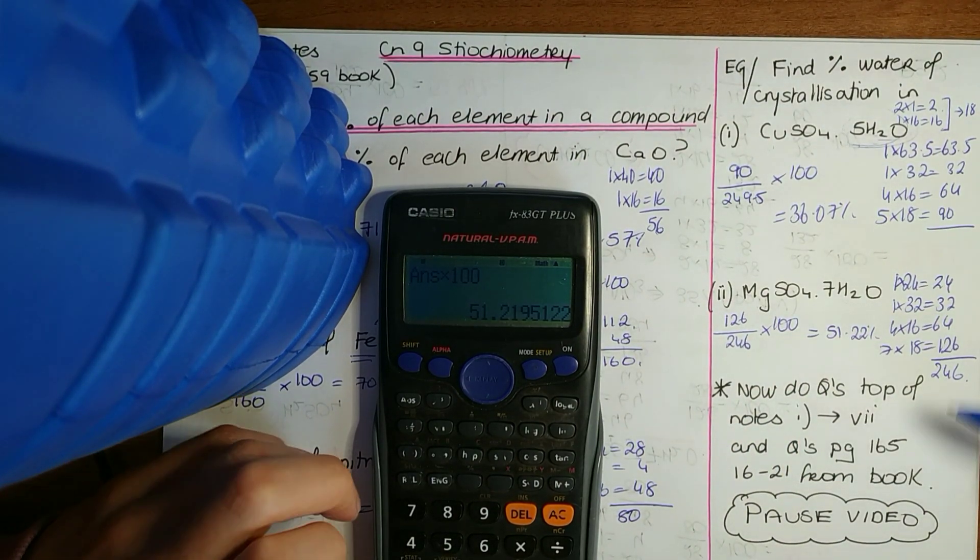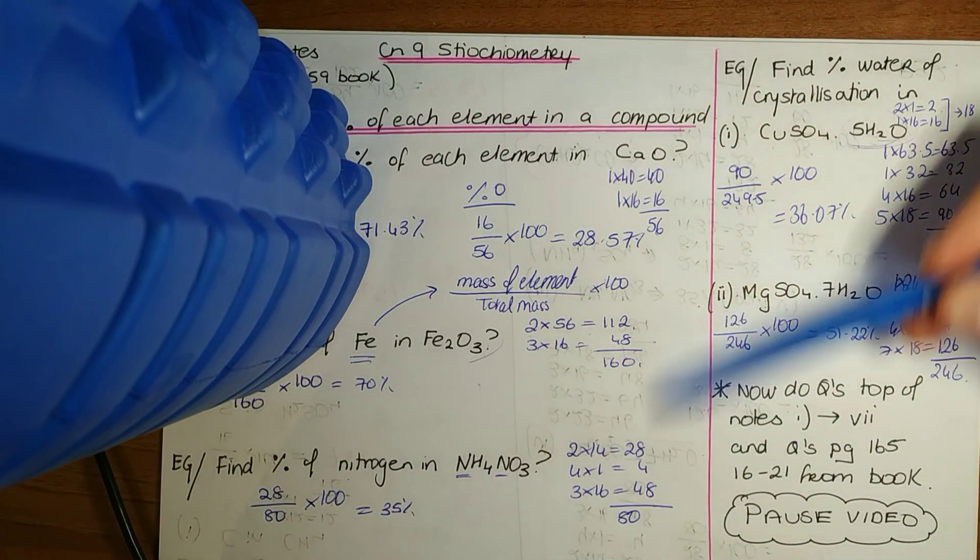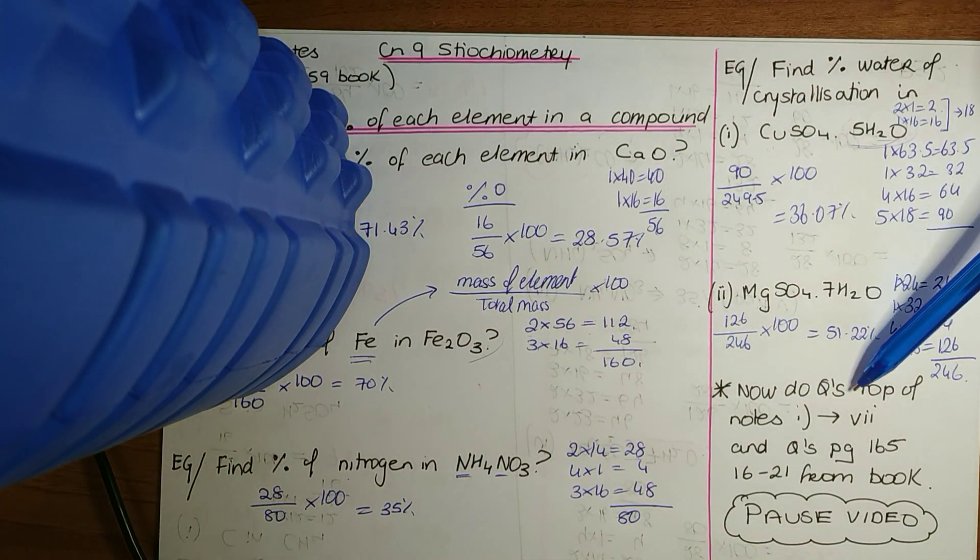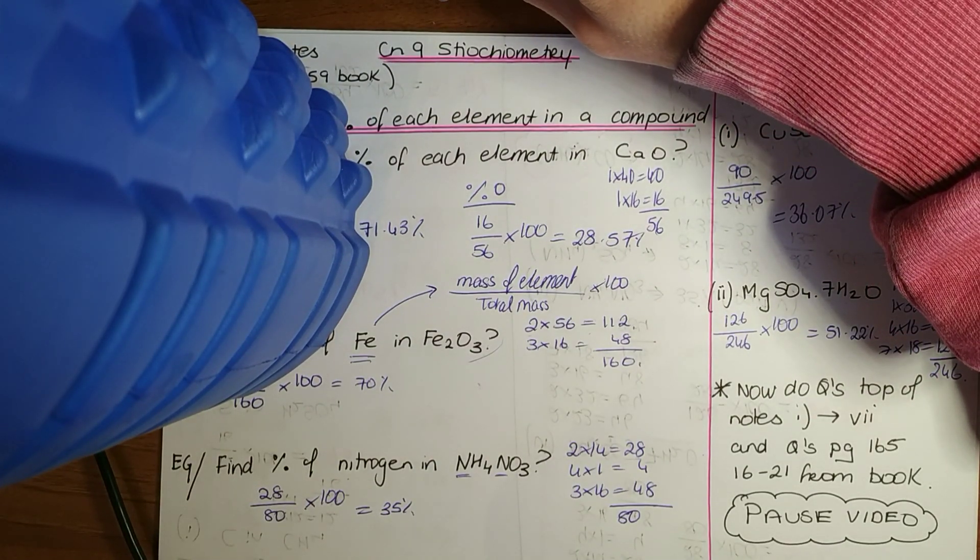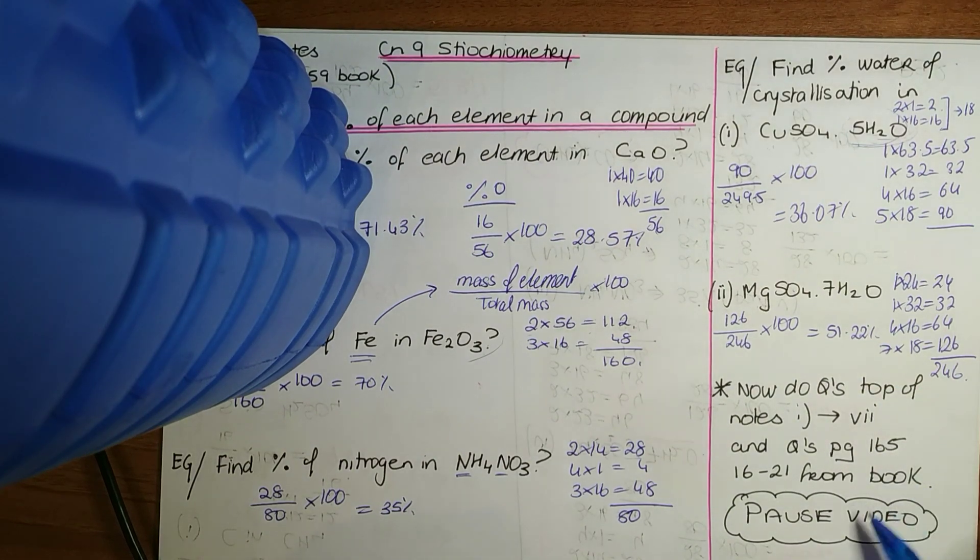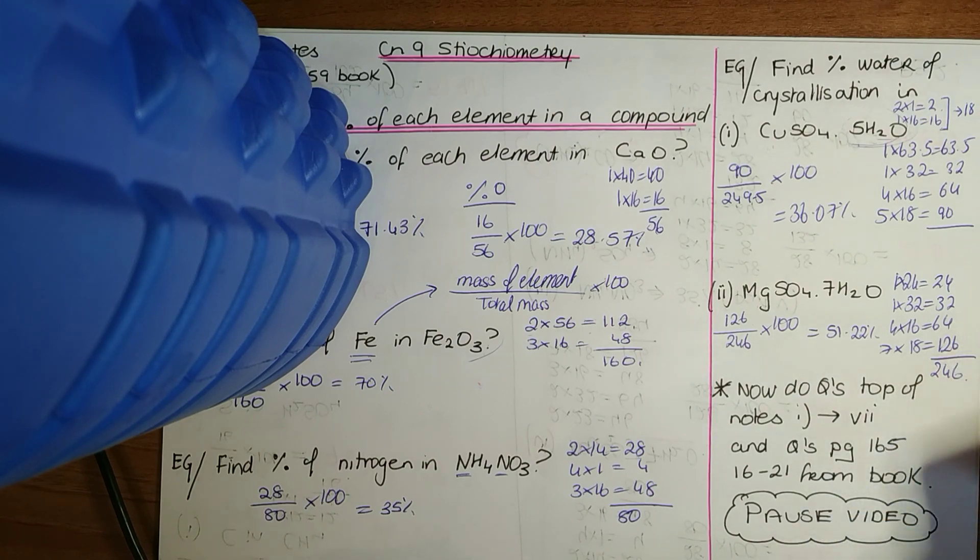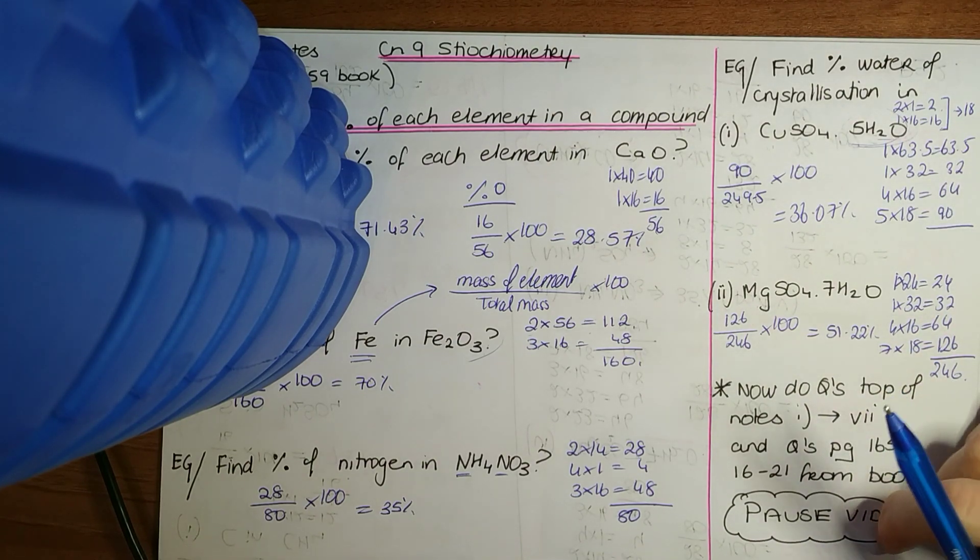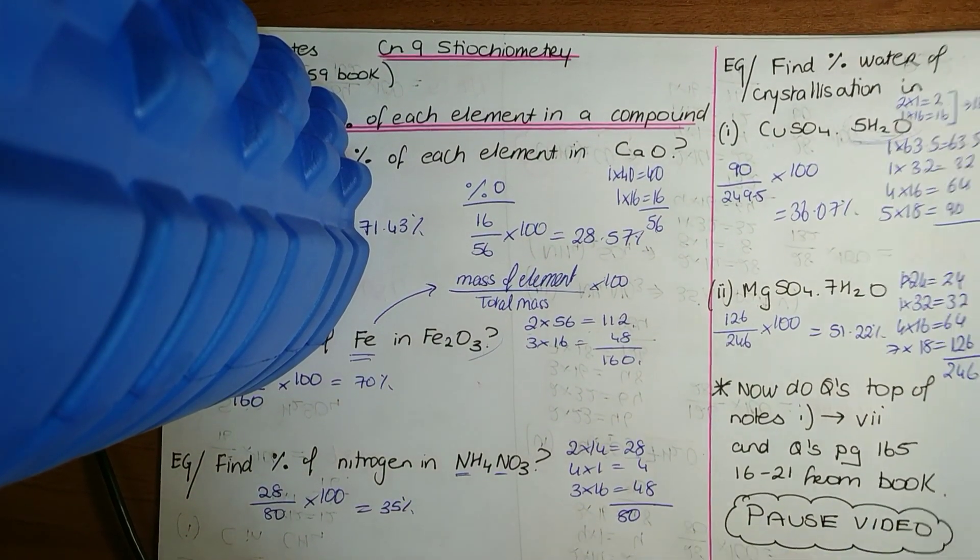As I say, go back over those ones yourselves. If you're unsure, keep practicing the examples and then go to the questions on the top of the notes. Top of the notes there, you see the percentage of carbon in CH₄, sulfur in H₂SO₄, magnesium in MgO, aluminum in Al₂O₃. Try those, and also in your textbook page 165 it is in my book anyway, 16 to 21. So pause the video and work away at those. Pause it now and have a go. Give yourself 10 minutes to do those.